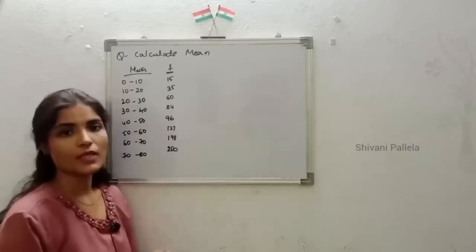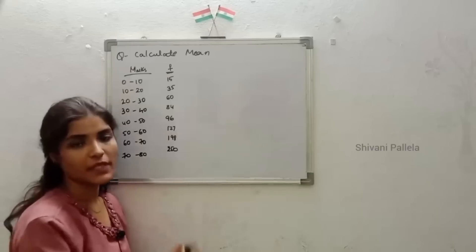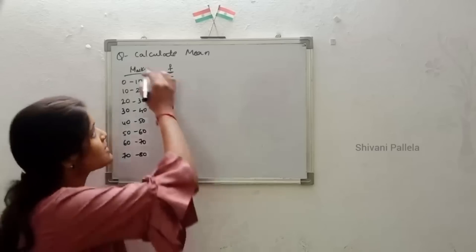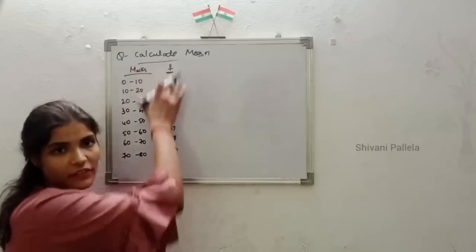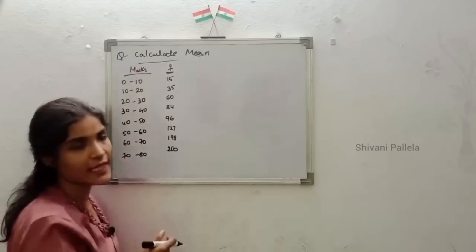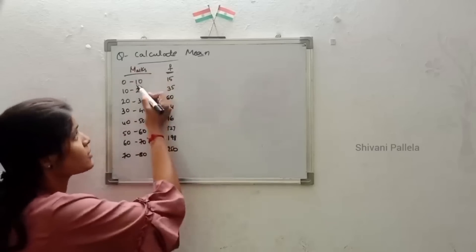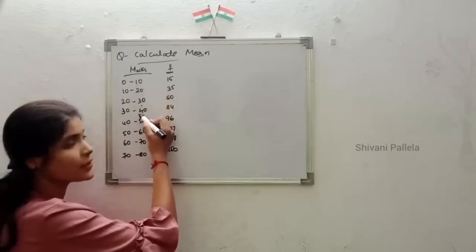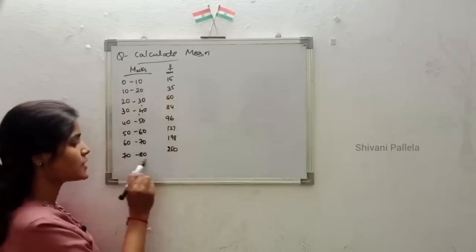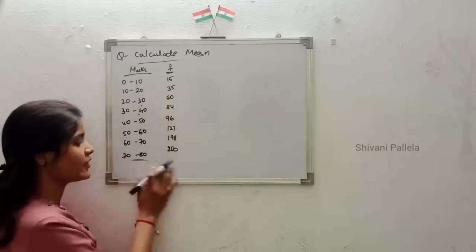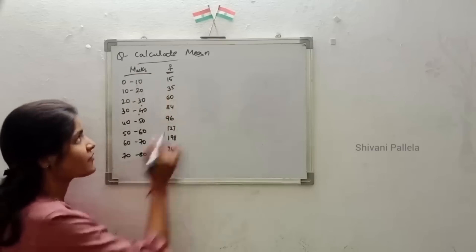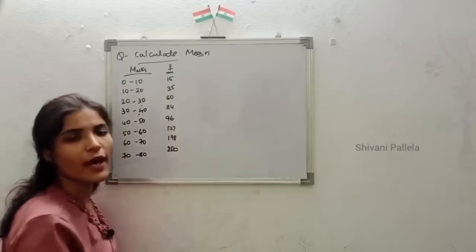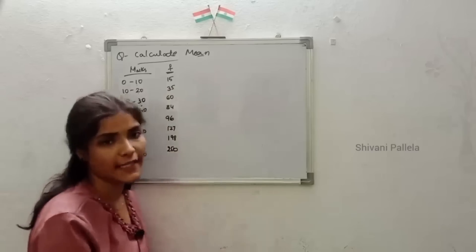Now let's discuss mean. In a previous year question paper, they asked to calculate mean and gave marks intervals: 0 to 10, 10 to 20, 20 to 30, 30 to 40, up to 70 to 80, along with the corresponding frequencies. Let me show how we need to calculate it.